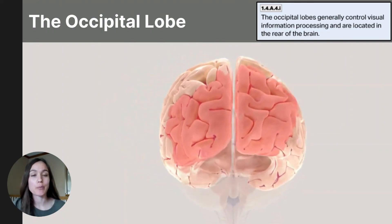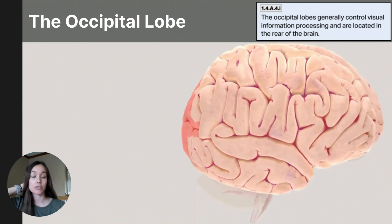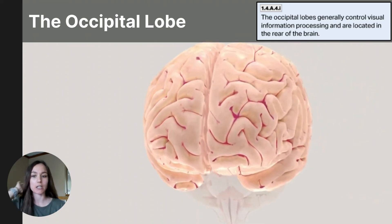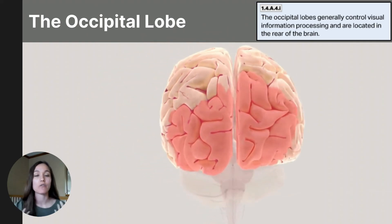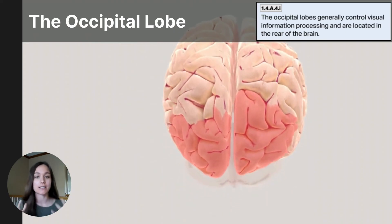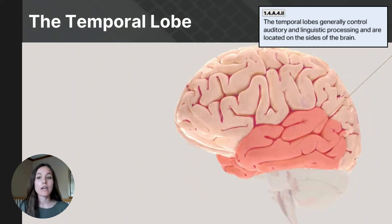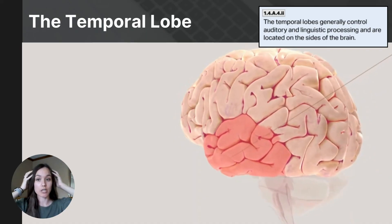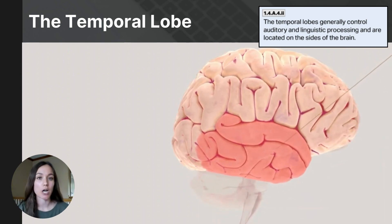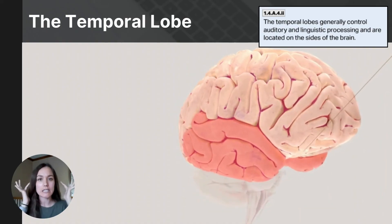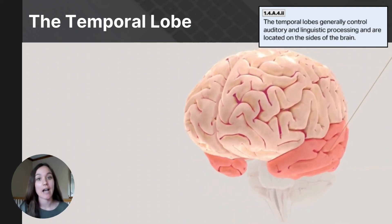The occipital lobe sits at the very back of the cerebrum, just above the cerebellum, and is primarily responsible for processing visual information — making sense of visual stimuli so the brain understands and interprets what is seen. The temporal lobe is located on both sides of the brain just above the ears, extending back to touch the occipital lobe. It is primarily responsible for processing auditory information, making it essential for hearing and understanding speech, and it also plays a significant role in memory formation as it houses the hippocampus.